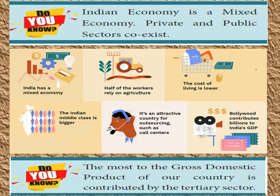GDP, or Gross Domestic Product, of a country is the total value of goods and services produced in a country, measured in terms of quarters or a year. It is an economic indicator used worldwide to show the economic health of a country. GDP can be calculated in three ways: by using expenditure, by production, or by income. The most contribution to the GDP of a country is made by the tertiary sector.